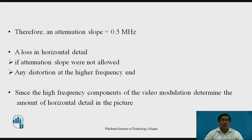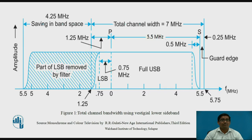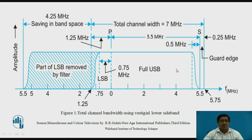Since the high frequency components of the video modulation determine the amount of horizontal detail in the picture. This figure shows the total bandwidth using vestigial lower sideband — it shows the 625-line system of the vestigial sideband. Vestigial sideband can be understood with the help of this diagram. There are two parts: the upper sideband and the lower sideband.